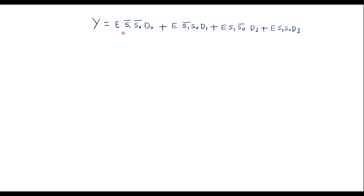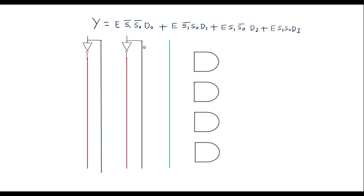With this Boolean expression I can draw the logic diagram. We have 4 product terms, so I need 4 AND gates. Each AND gate corresponds to one product term, and since each product term has 4 inputs — E, S1 or S1̄, S0 or S0̄, and a data input — each AND gate will have 4 inputs.